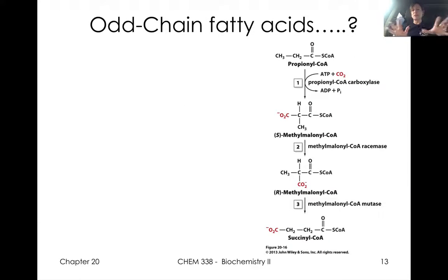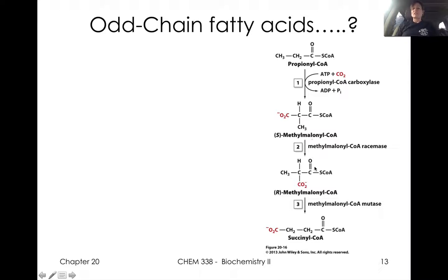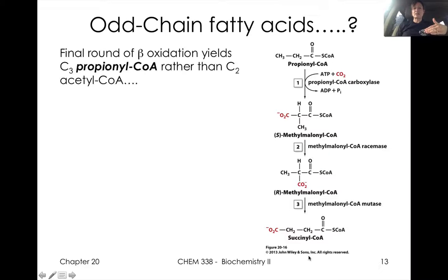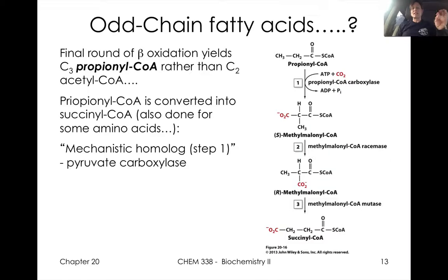Another thing we'll briefly mention: we've always considered even-chain fatty acids based on a number of two. When you divide those up into acetyl-CoA units with two carbons, you'll always have an even number. With odd-chain fatty acids, once you get down to that last piece with three carbons it becomes problematic. We'll have this propionyl-CoA — a three-carbon piece — and we'll have to deal with how you metabolize that. We'll go through some details of this in our activity.